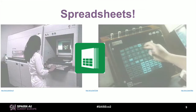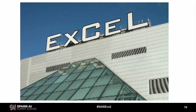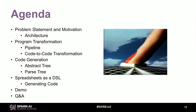You might not expect to be talking about spreadsheets in a big data conference, but I happen to think we're in the perfect place to talk about that. Our agenda for today: I'll start with the problem statement and motivation, then talk about the architecture, then go into program transformation — specifically code-to-code transformation. Then code generation, two ways: based on an abstract syntax tree and based on a parse tree. Finally, we'll discuss spreadsheets as a domain-specific language. I'll show a number of demos and close with questions.